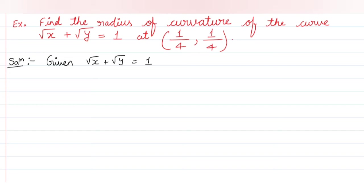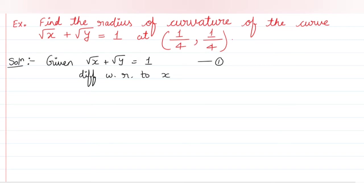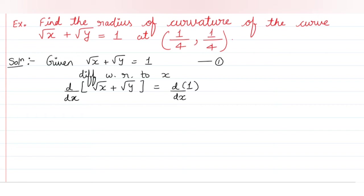We will find the Radius of Curvature using the Second Order Derivative. We need to differentiate with respect to x — this will be equation number 1. Applying d/dx to both sides, the right hand side derivative of 1 will be 0.